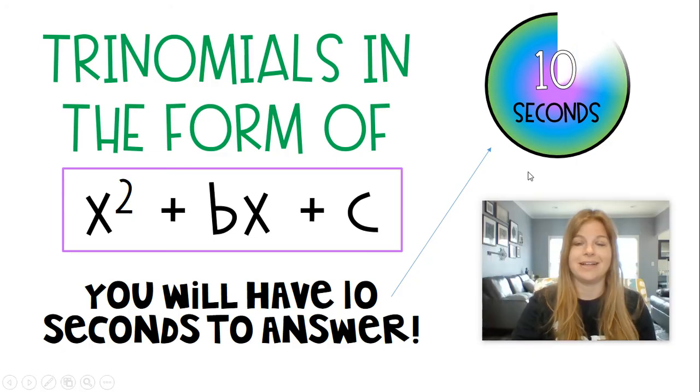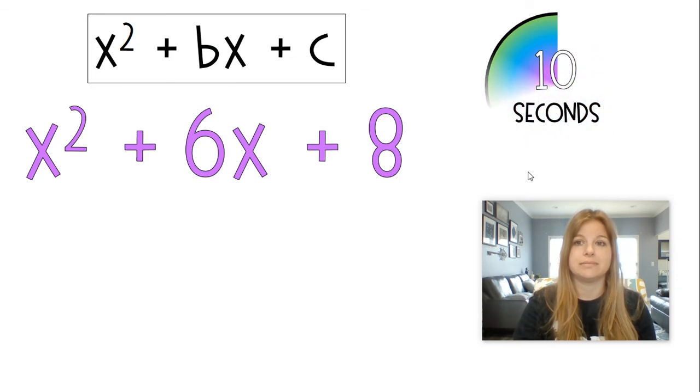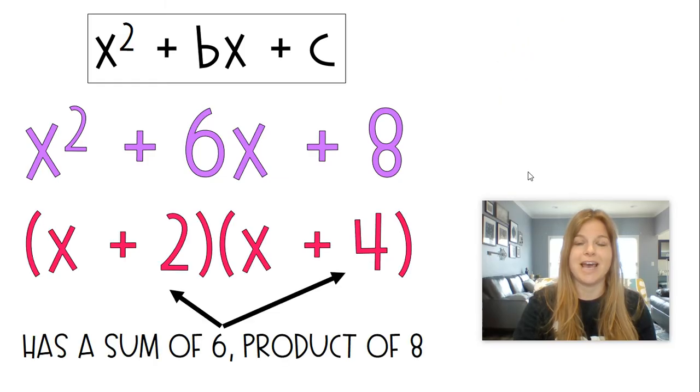Okay, go for it. x squared plus 6x plus 8. Did you get it? x plus 2, x plus 4. 2 and 4 have a sum of 6 and 2 and 4 have a product of 8.